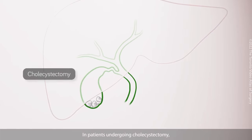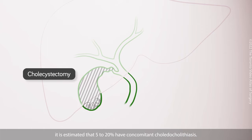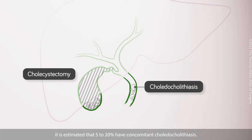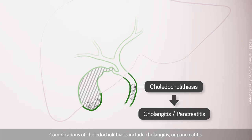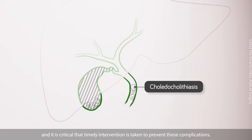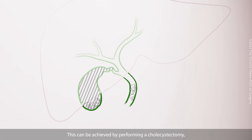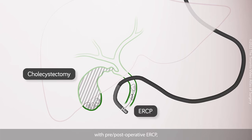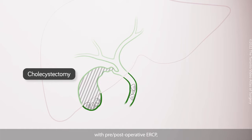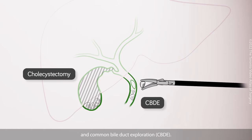In patients undergoing cholecystectomy, it is estimated that 5-20% have concomitant choledocal lithiasis. Complications of choledocal lithiasis include cholangitis or pancreatitis, and it is critical that timely intervention is taken to prevent these complications. This can be achieved by performing a cholecystectomy with pre- or post-operative ERCP, or a single-stage procedure with cholecystectomy and common bile duct exploration.